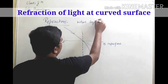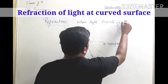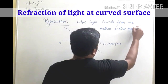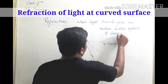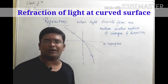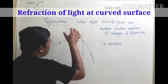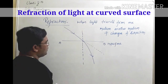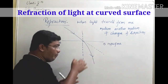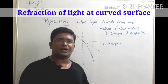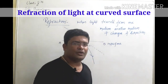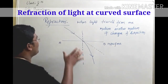When does refraction occur? When light travels from one medium to another medium, it changes its direction — it bends. This change in direction when light travels from one medium to another medium is called refraction of light.